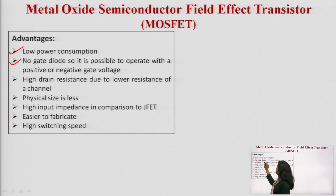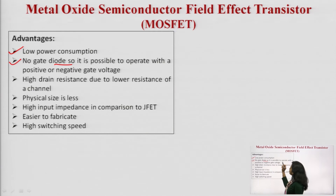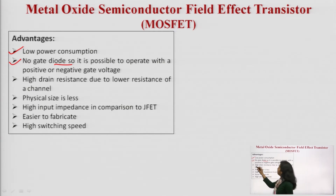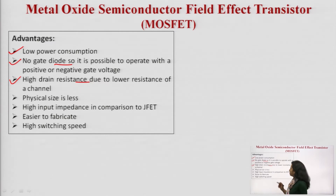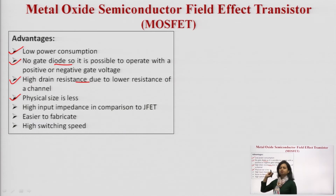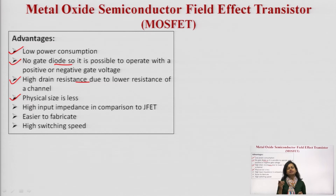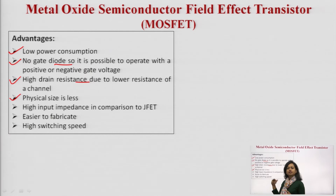No gate diode — there is an insulation, so it is possible to operate with a positive or negative gate voltage. High drain resistance because of the lower resistance of the channel; channel resistance is very, very low, giving high drain resistance. The physical size of the MOSFET is also very small, which is why it is preferred.